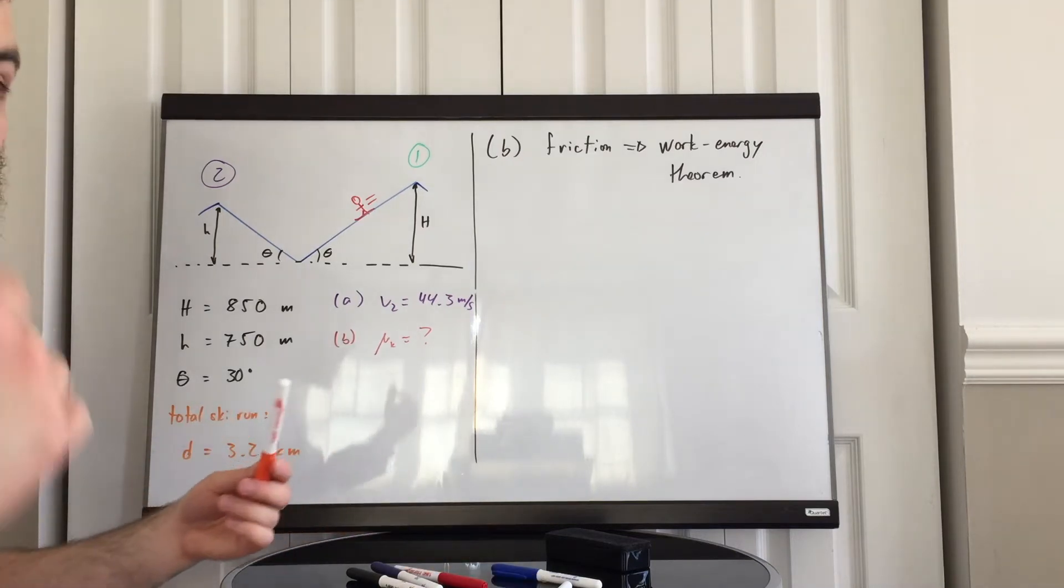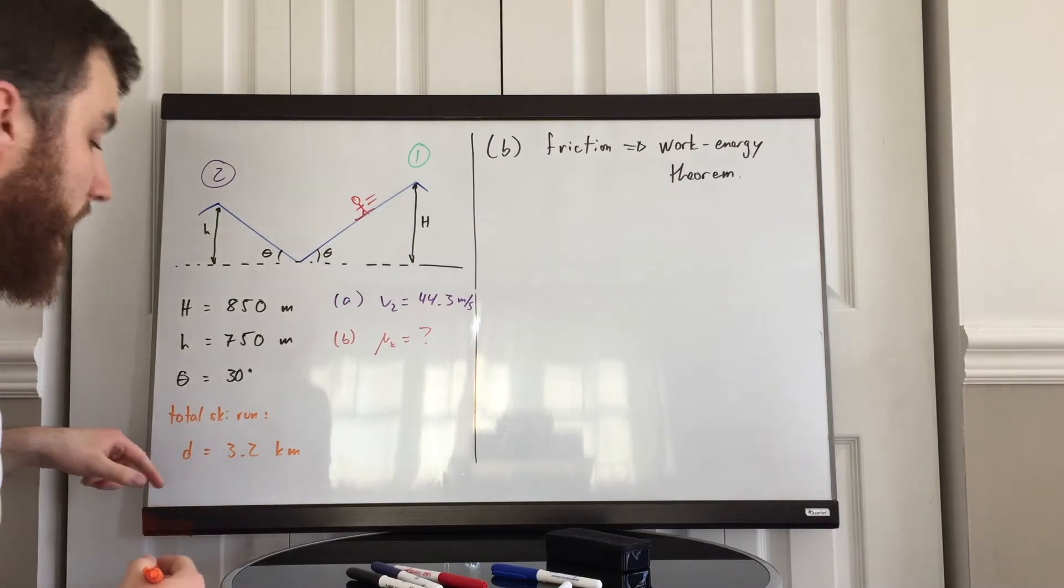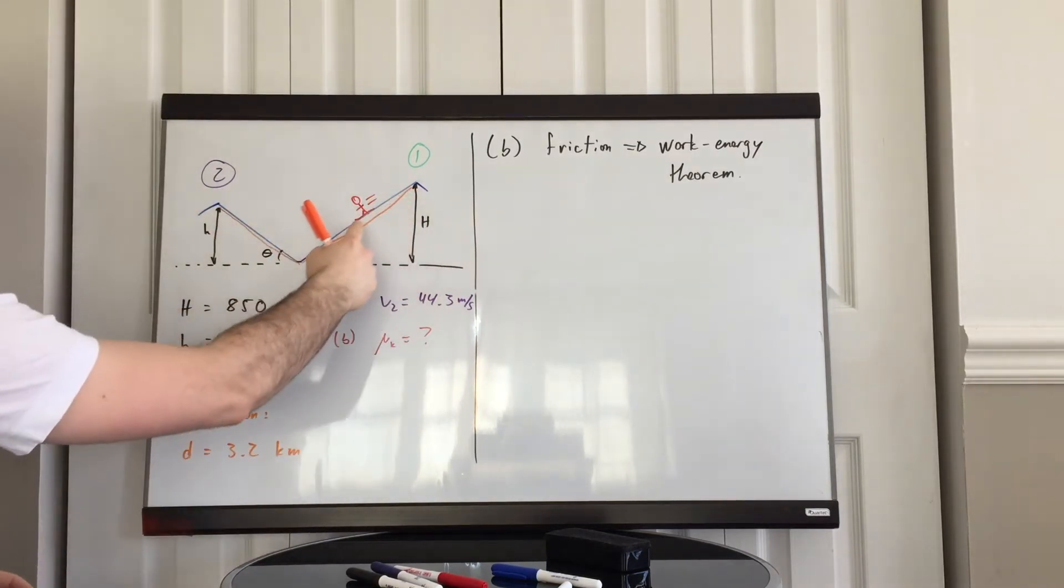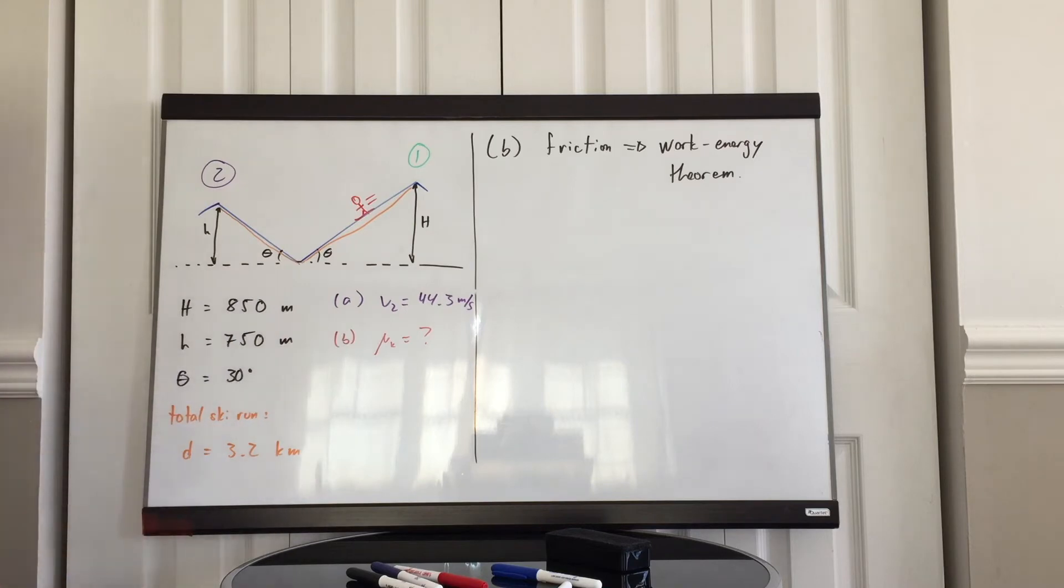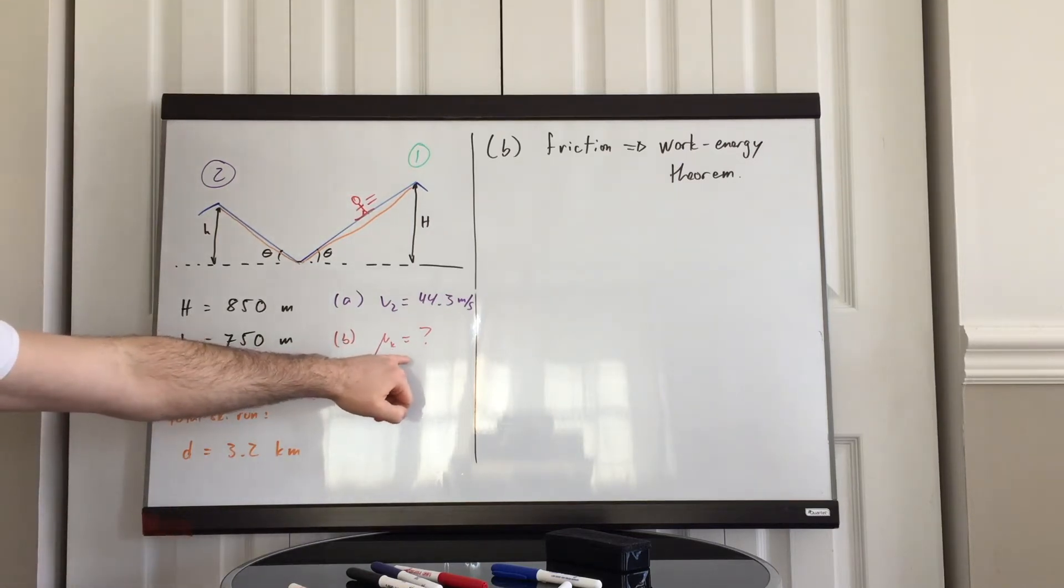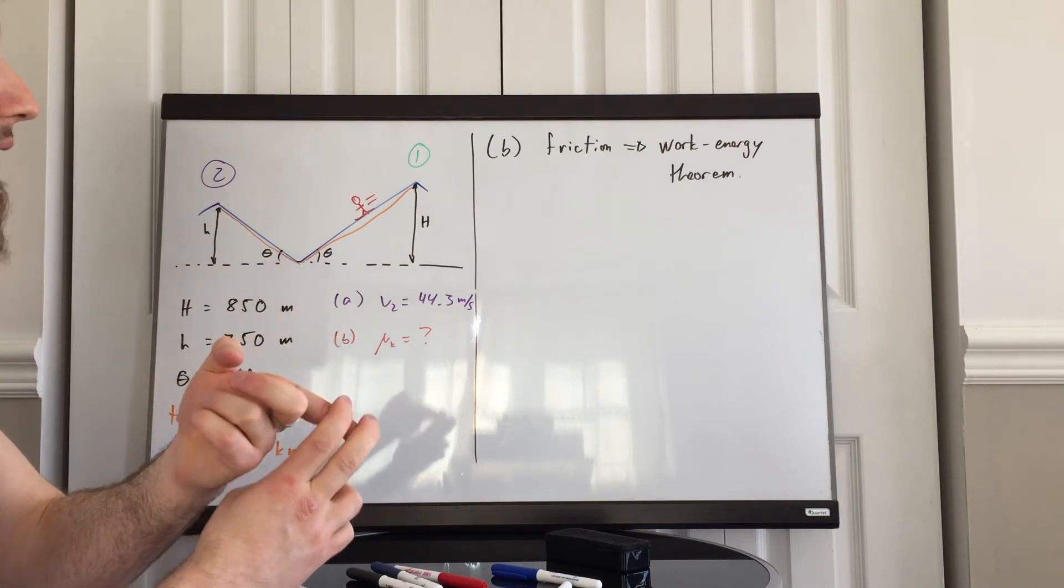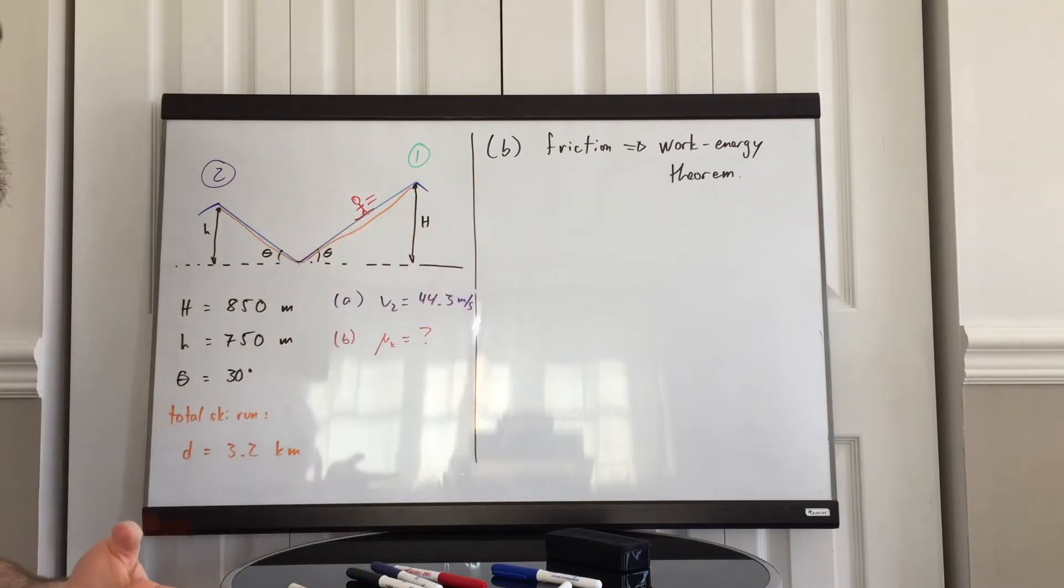We need to consider how long or over what distance, what path does friction act. It acts along all of the skier and the whole 3.2 kilometers. What I have here is illustrated all throughout these two slopes. All of that is d in orange, the 3.2 kilometers. So we need to find what the coefficient of kinetic friction is. We need to find first what the work done by friction is. And to do that we need the work energy theorem.